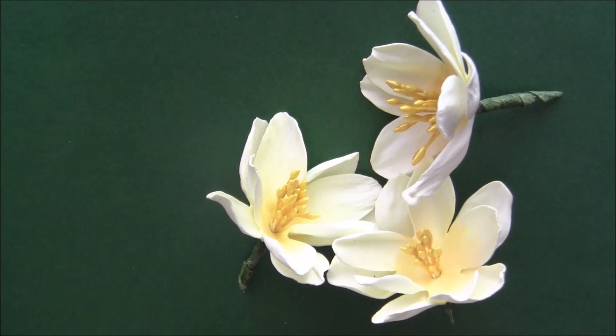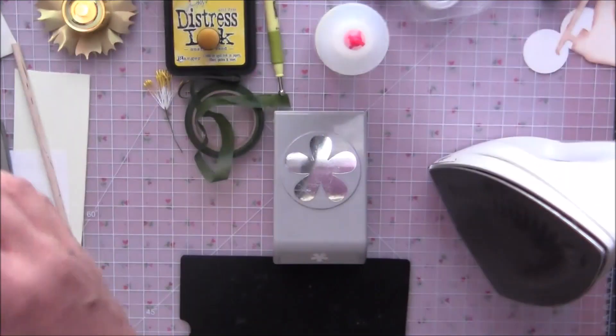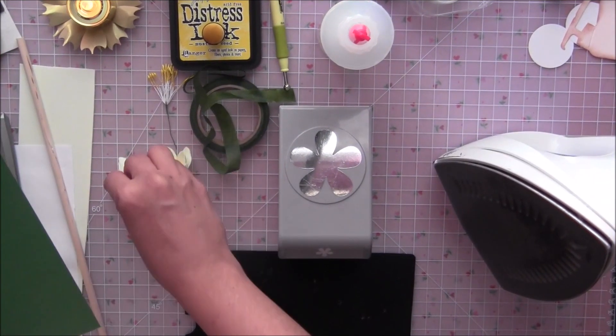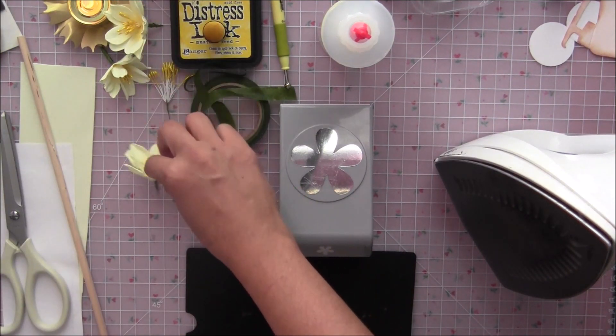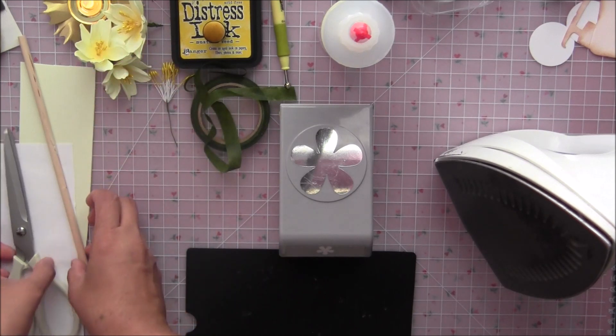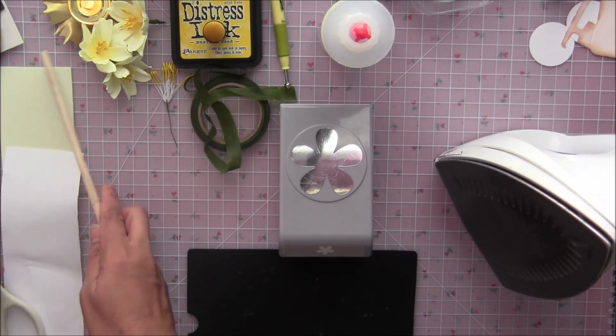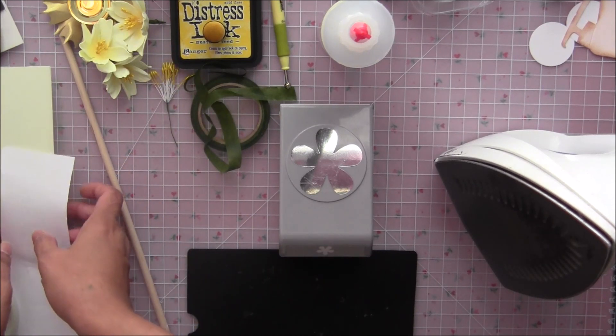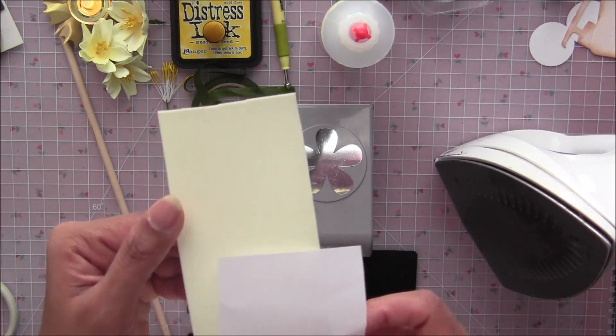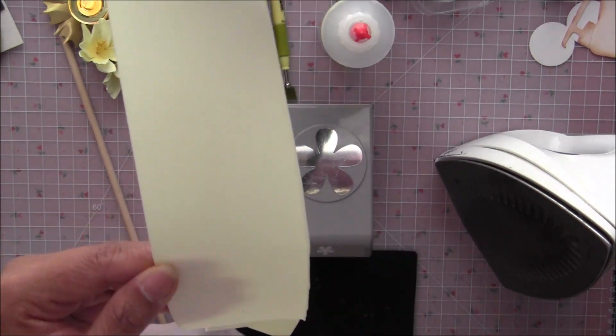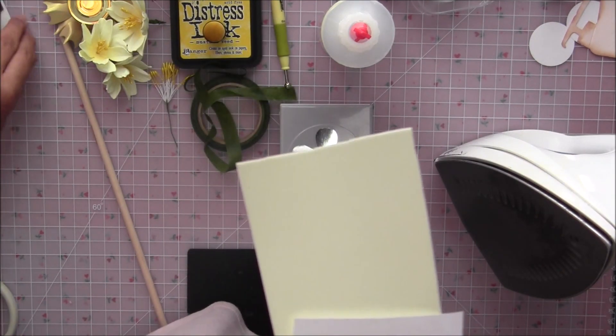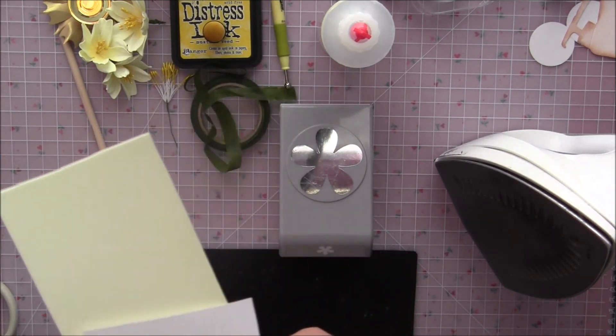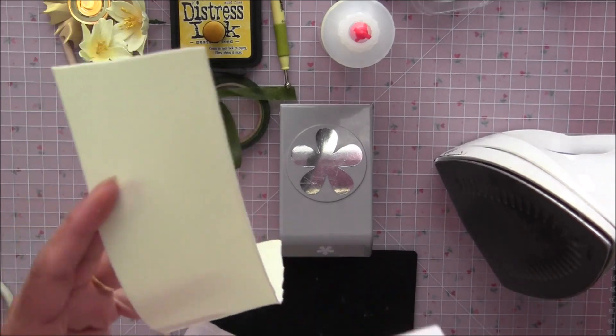So let's get started. First of all we will need a foam, any color you can use if you have other colors handy but I always prefer light colors. So this is the foam and since we are using our regular retro punch we are going to use some techniques.